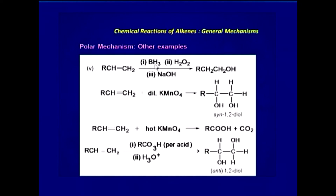Under polar addition, BH3 with hydrogen peroxide followed by sodium hydroxide gives an alcohol — a primary alcohol. With dilute KMnO4, the product is a 1,2-diol where both OH groups come to 1,2 positions relative to the double bond. With hot KMnO4, the product is not a diol but a carboxylic acid, and a molecule of carbon dioxide is eliminated.